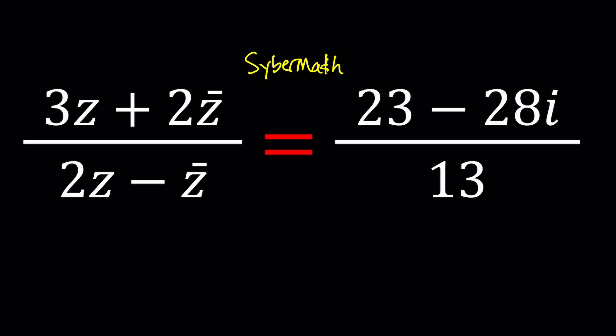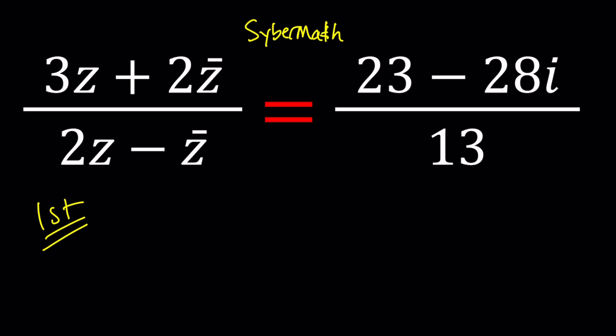So the first method is going to focus on replacing z with a plus bi because it's the name of this channel. It also solves the problem right hopefully. Let's see.